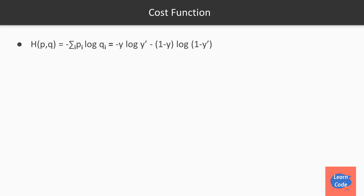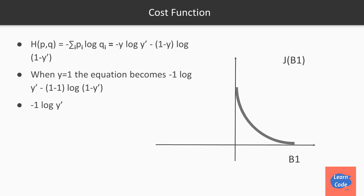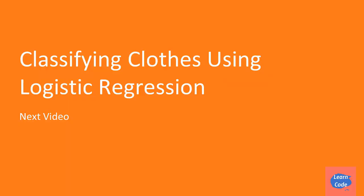When y=1 and the predicted value is also 1, the cost is 0; if the predicted value is 0 when y=1, the cost is very high. Similarly, when y=0 and the predicted value is also 0, the cost function is low; otherwise it is very high. In the next video, we will be classifying cases using logistic regression.